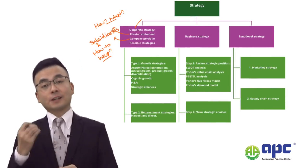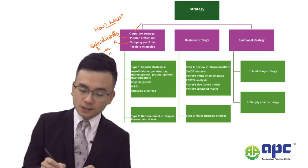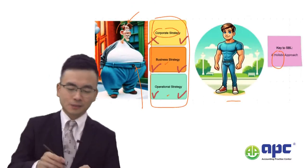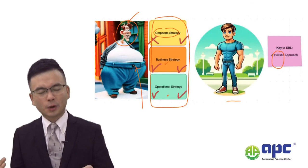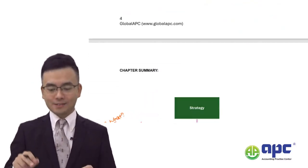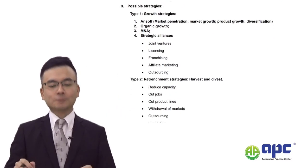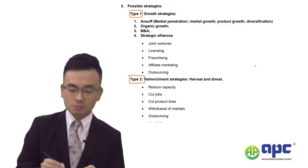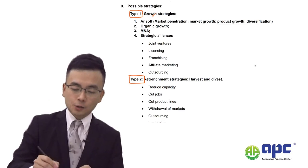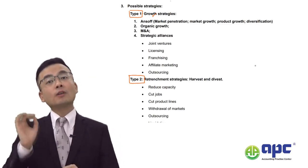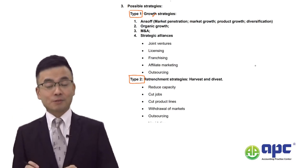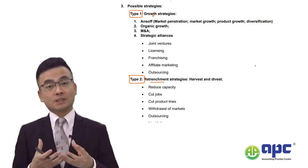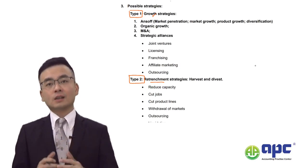Now, the third thing we need to decide is our possible strategies from the corporate level — from the head's point of view, we need to look at the future. From the SBO exam's point of view, it's always thinking about the head. Regarding possible strategies, there are two types: how you're going to grow the business, but don't always think about growth when setting corporate strategy. Sometimes you need to retrench — cutting business lines — because you're facing difficulties in the marketplace.